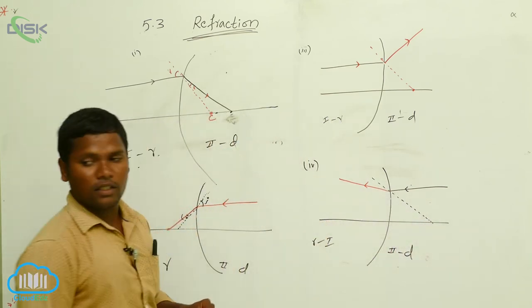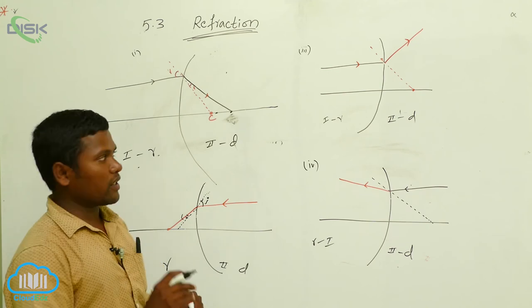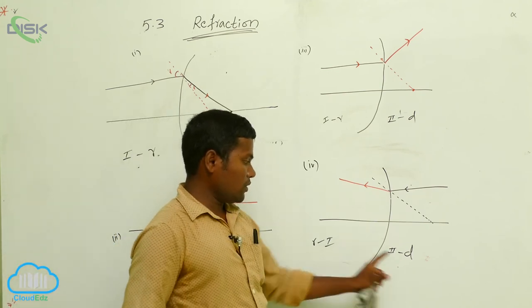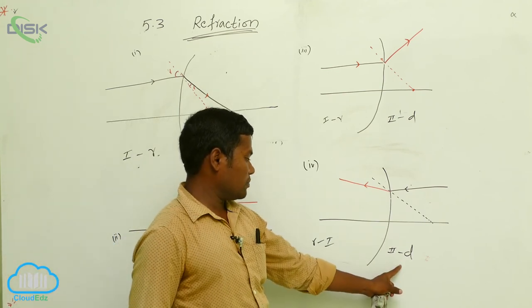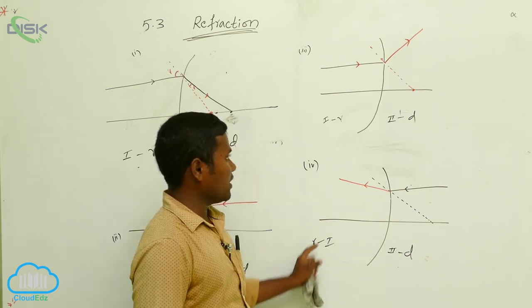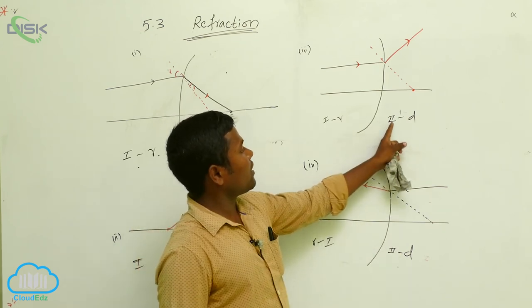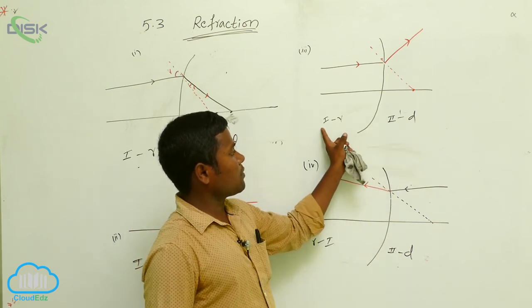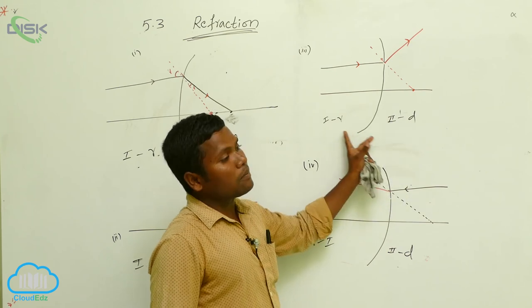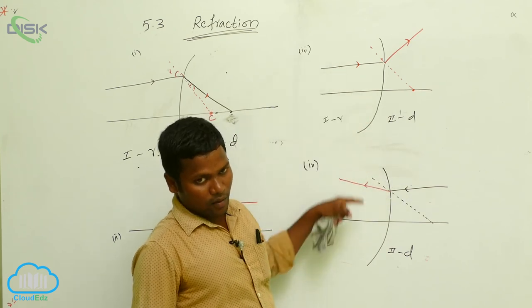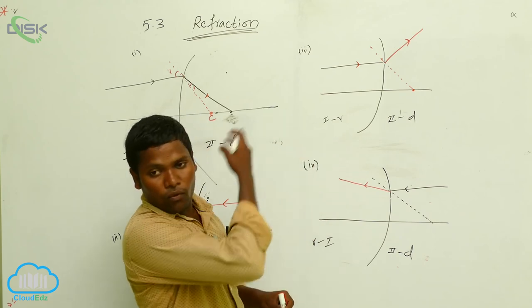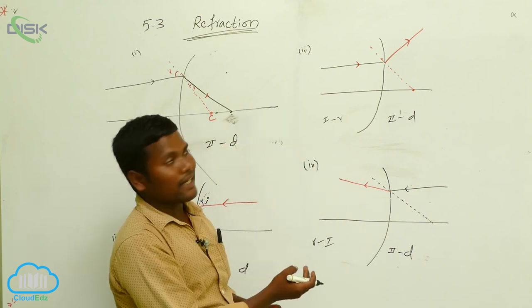So here, rarer medium to denser medium, and here denser medium to rarer medium. Whatever medium you are changing, the ray direction will also change. These are the four cases that exist.